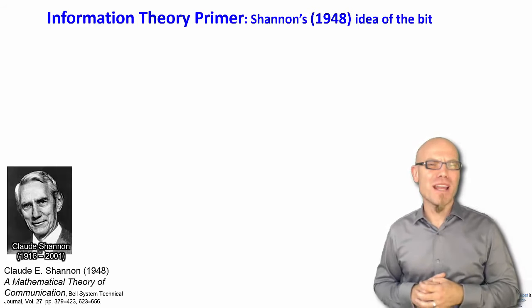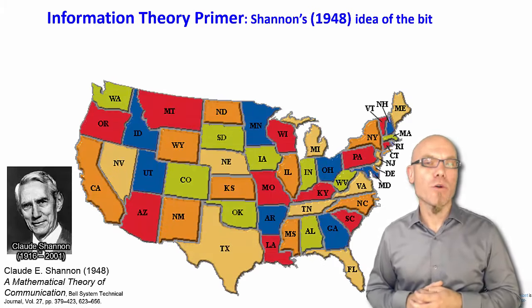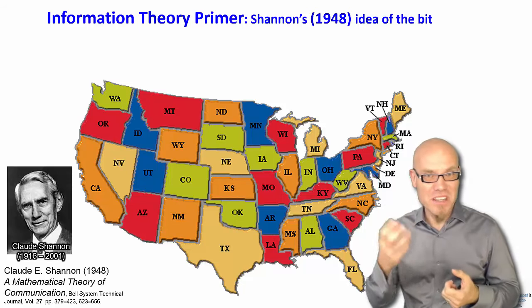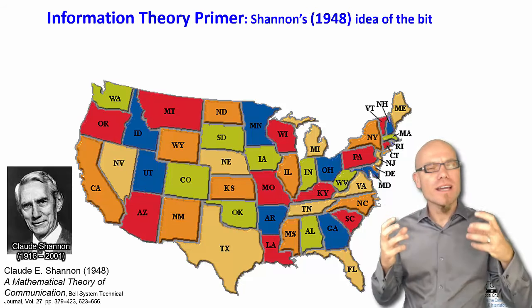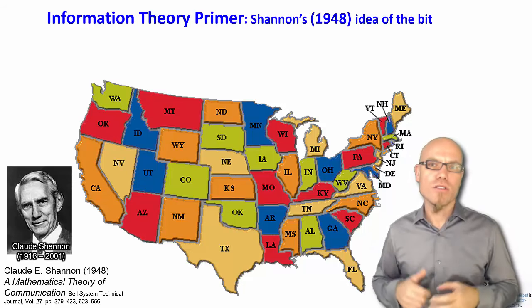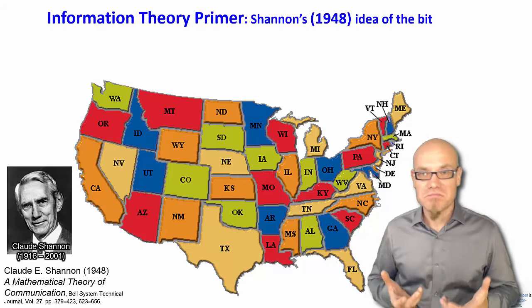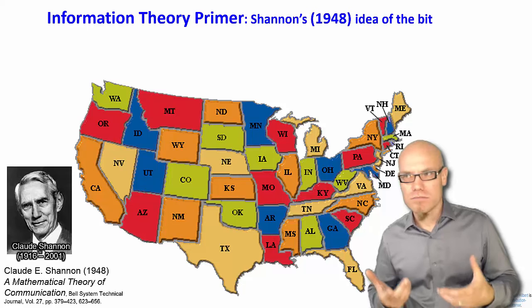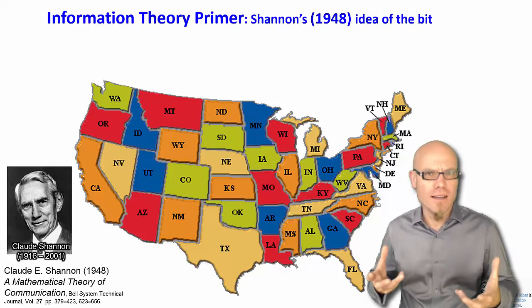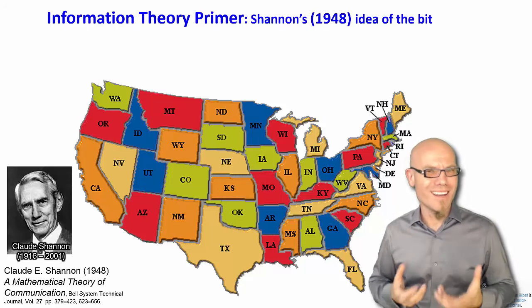Shannon often used to explain the power of the bit with a child's game of 20 questions. There are two children. One thinks of a city in the United States, and the other one has to extract this information through a communication process. You could say is this city San Francisco? No. Is it New York? No. Los Angeles? No. Is it Davis? No. Is it Seattle? And you have to ask a lot of questions until you might hit the nail on the head.